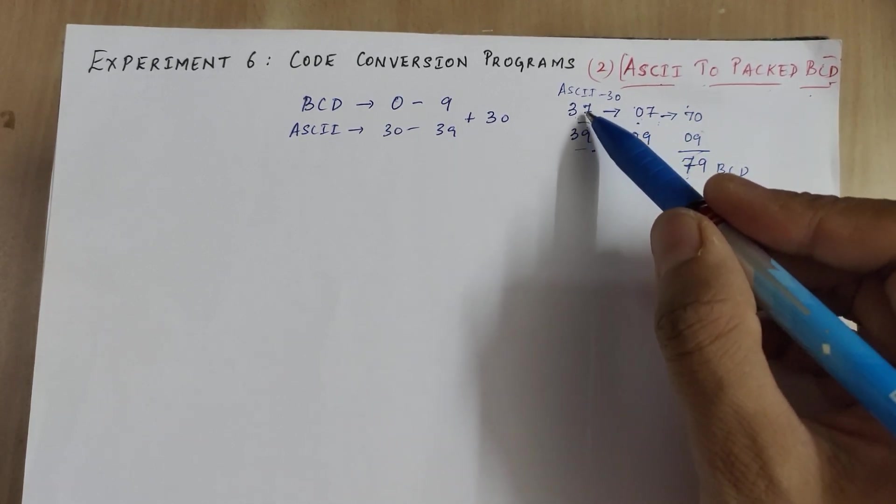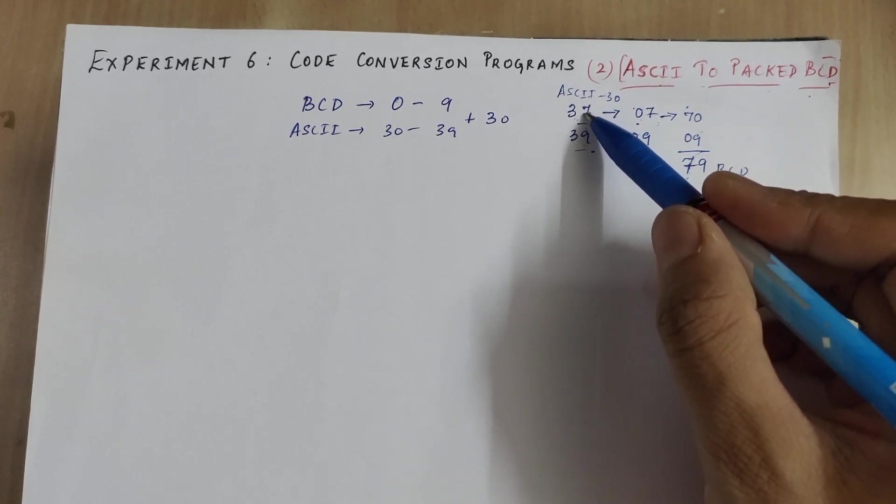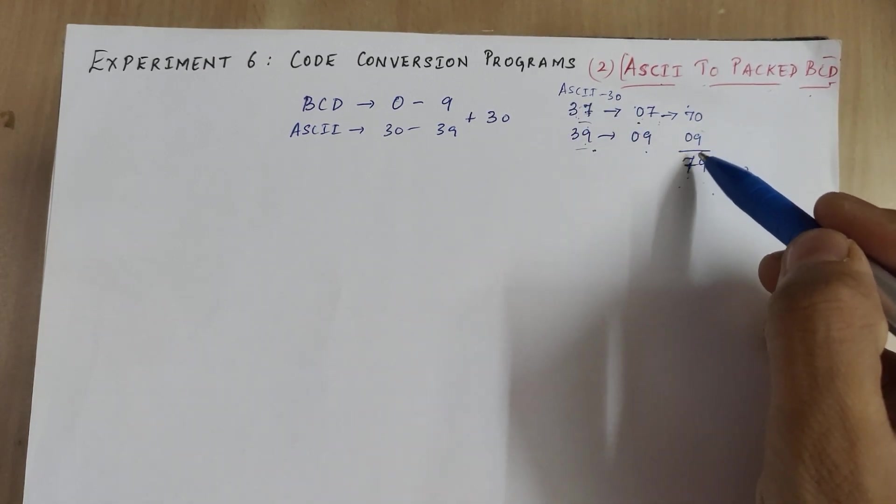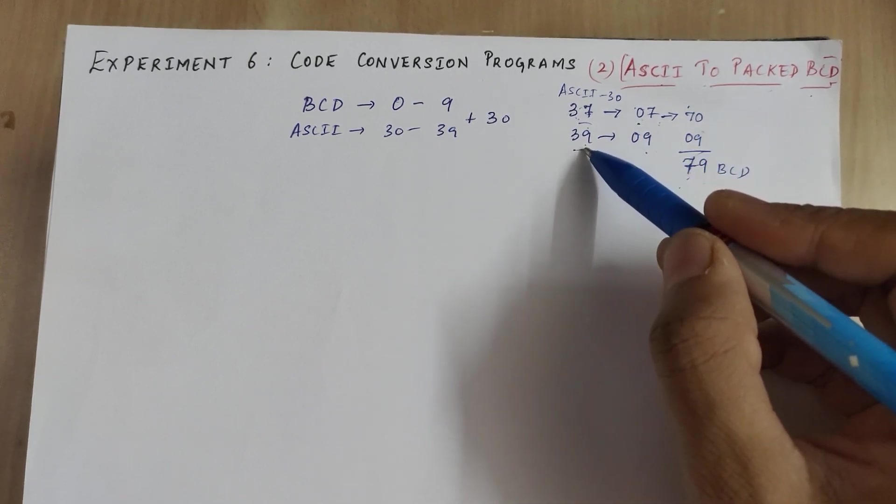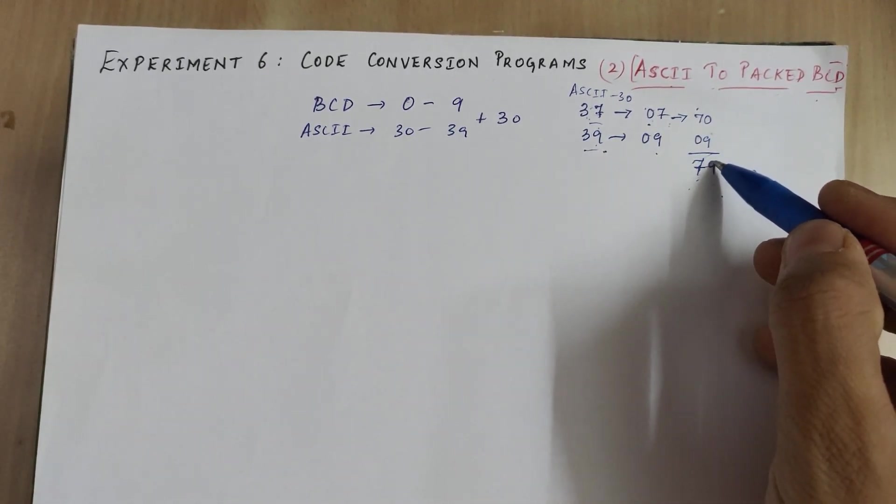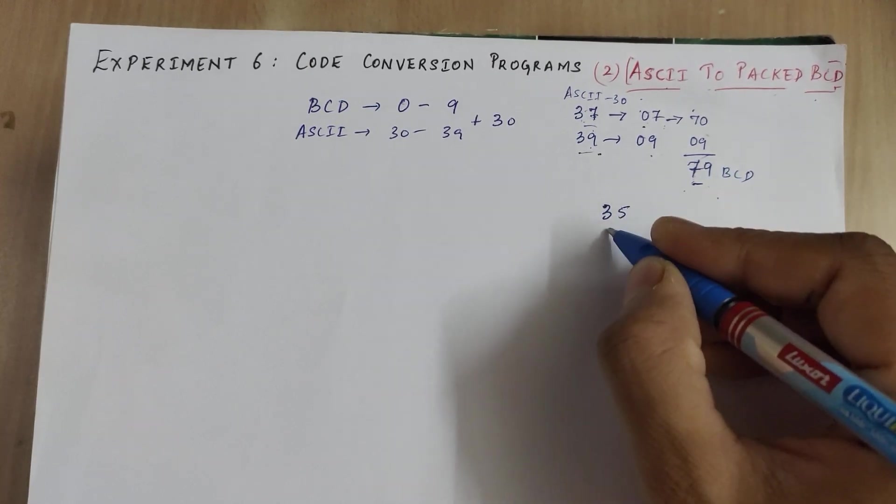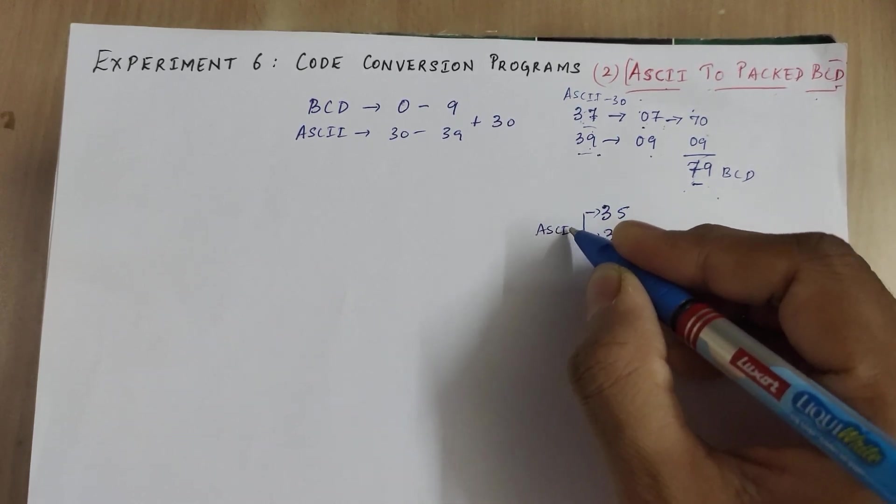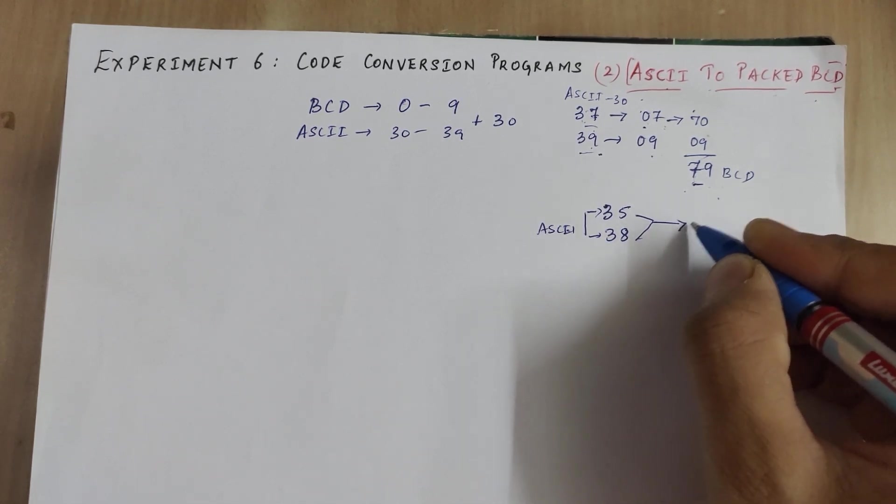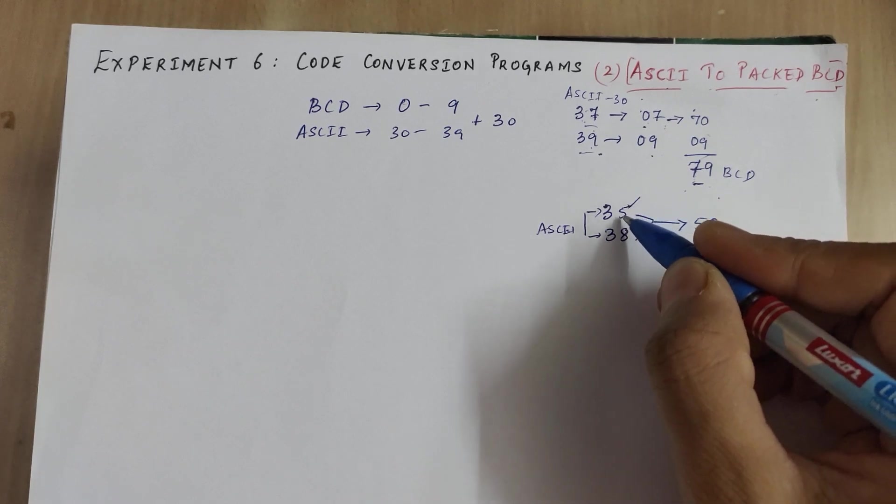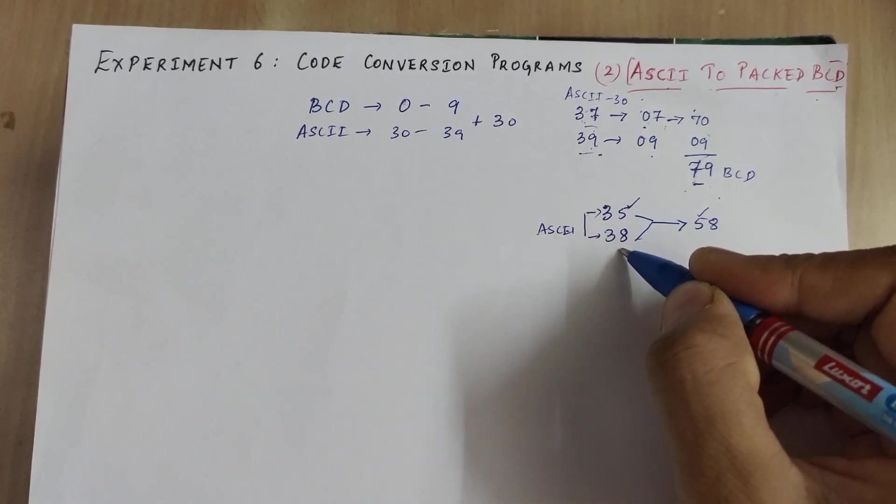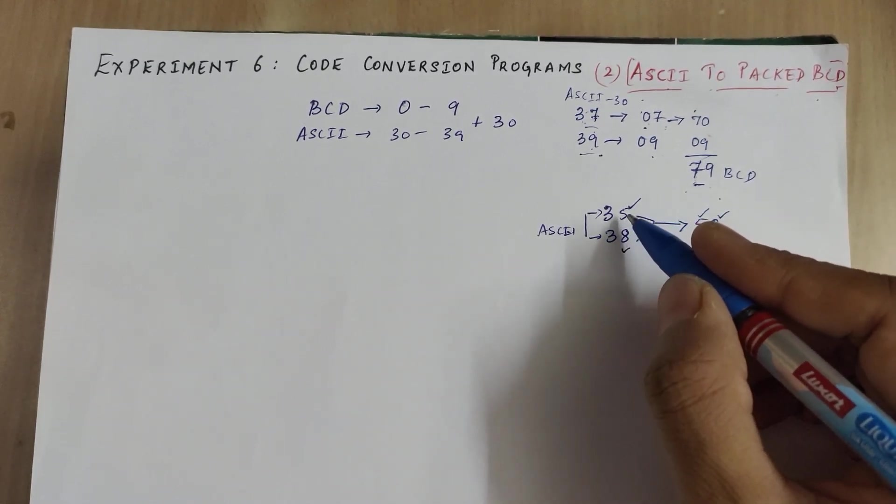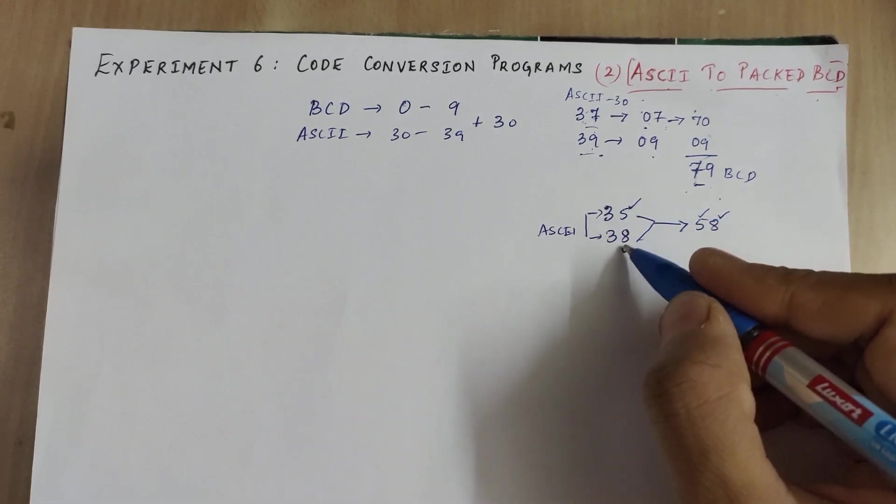We are assuming that the first ASCII number's equivalent BCD is the MS digit. The second ASCII number's equivalent BCD is the lower significant digit. For example, if 35 and 38 are the two ASCII numbers given, the equivalent packed BCD is 58, assuming 35 is the ASCII of the MS digit and 38 is the ASCII of the LS digit.